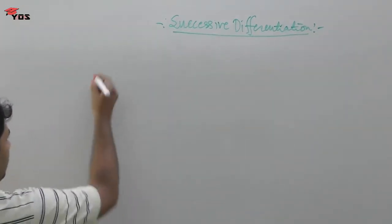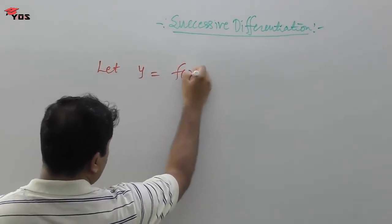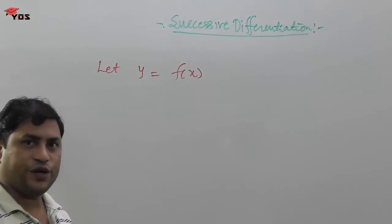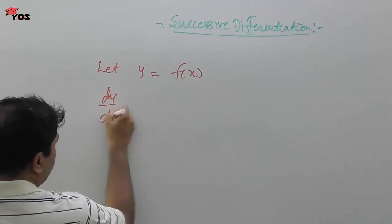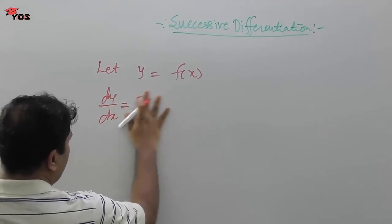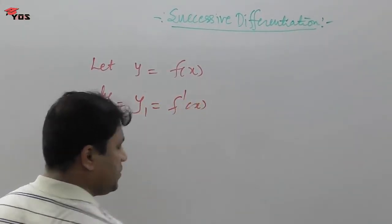For example, we have a function, suppose we have a function y equals f of x. Now, we differentiate this function and we get dy by dx equals y₁ equals f prime of x.